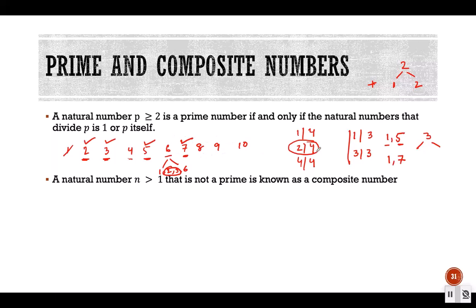There are many other prime numbers. For example, 11 is the next prime number: the only divisors of 11 are 1 and 11, with no other divisors.